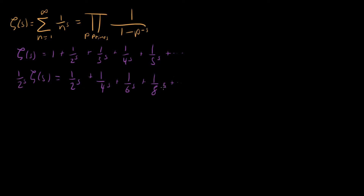What we have now is a series with 1 over every even number — so every number which has 2 as a prime factor. It could have 2 multiple times, like 4, or three times like 8, but every single term in this series has 2 as a prime factor. So now, why don't we take the original zeta of s and subtract this?